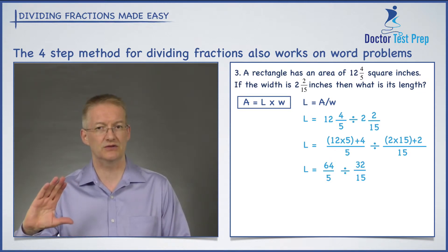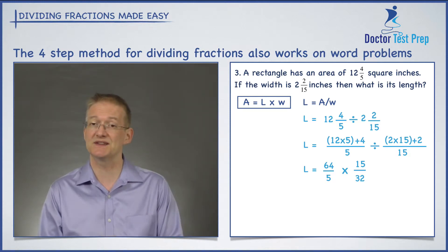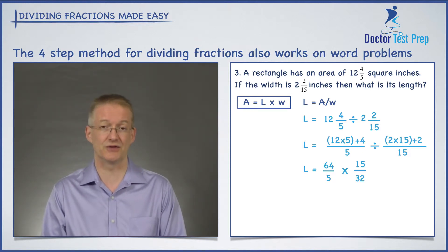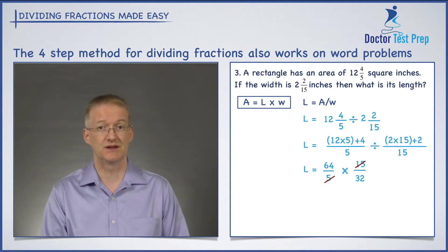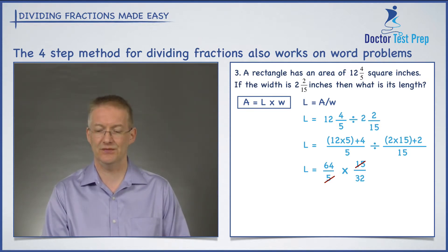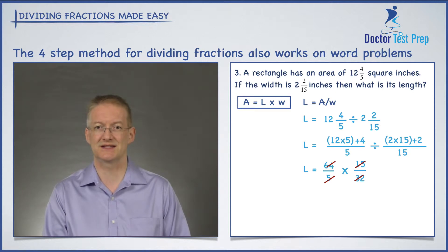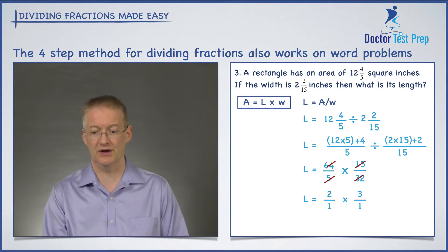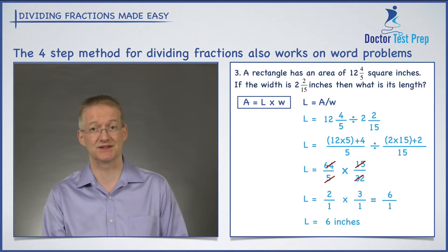Step number two: take that second fraction, flip it upside down, and convert the divide sign into a multiply. So now I have 64 over 5 times by 15 over 32. The 5 and 15 reduce — giving me 1 for the 5 and 3 for the 15. The 32 and 64 also reduce — 32 into 32 is once, 32 into 64 is twice. So I'm left with 2 over 1 times by 3 over 1, which gives me 6 over 1, which is simply 6. So my length is 6 inches.